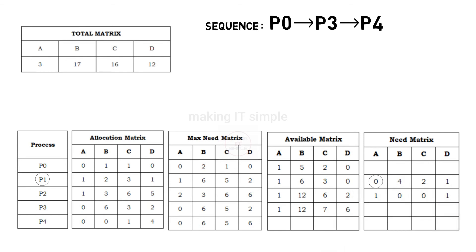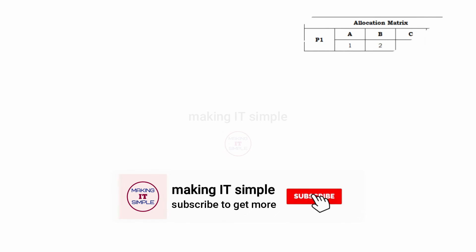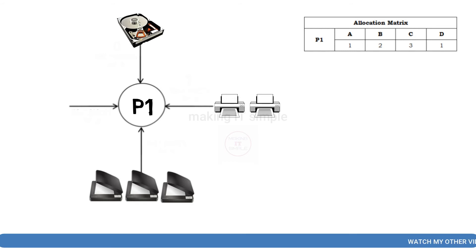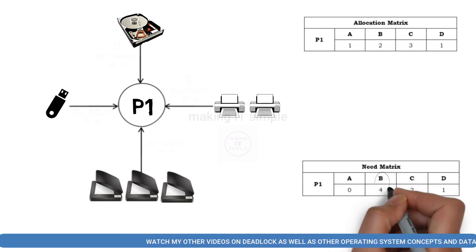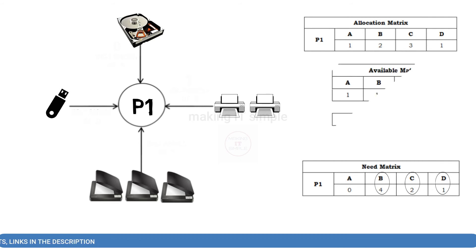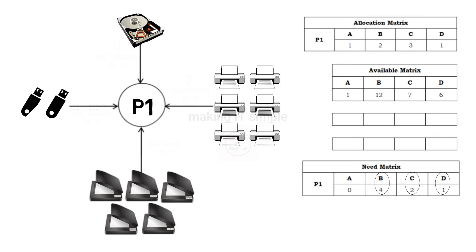P1 requires 0 instances of resource A, 4 instances of resource B and we have 12 free, 2 instances of resource C and we have 7 free, and 1 instance of resource D and we have 6 of them. So we can provide the required number of resources to P1. According to the allocation matrix, process P1 already has 1 instance of resource A, 2 instances of resource B, 3 instances of resource C, and 1 instance of resource D. It requires 4 instances of resource B, 2 instances of resource C, and 1 instance of resource D. So we will provide 4 instances of resource B, 2 instances of resource C, and 1 instance of resource D from available resources.